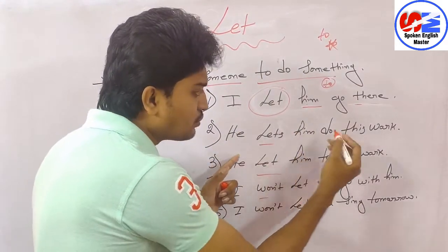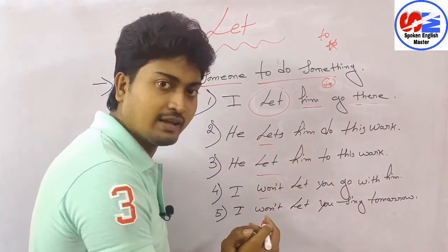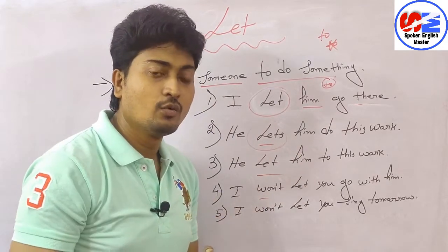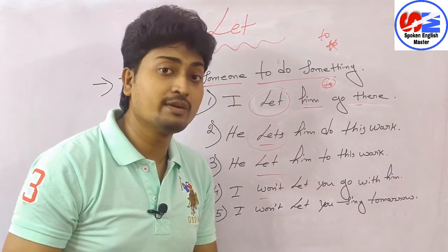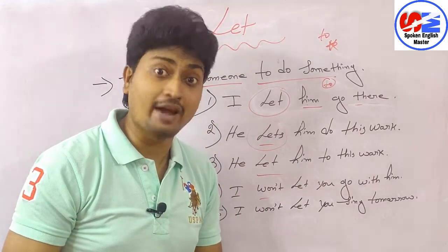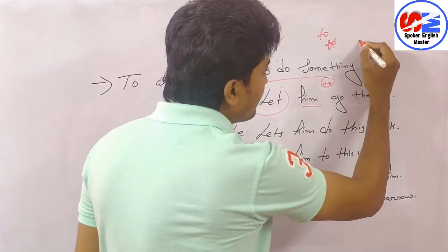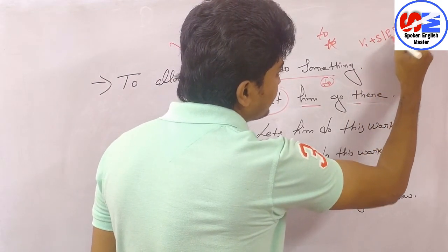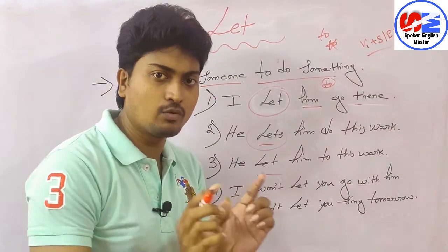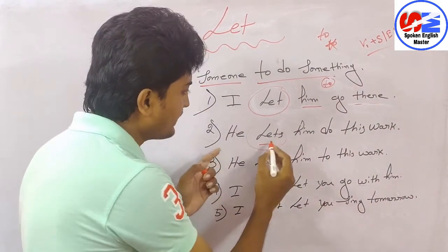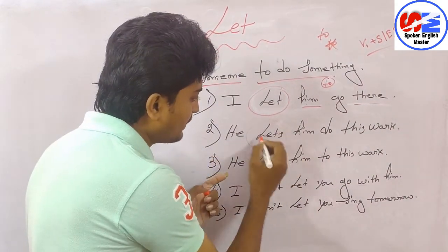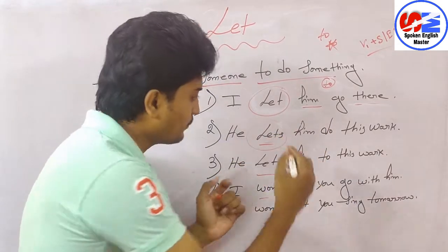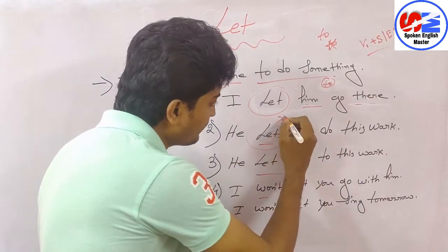'He lets him do this work.' Why 'lets'? Because we know, with third person singular number, we always use V5. V5 means with he/she/it we add -s or -es. So here the main verb is LET, and LET with -s becomes LETS — that is your V5 form. And the verb after the object is V1.